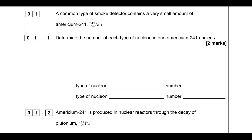A common type of smoke detector contains a very small amount of americium-241, and we've got its nuclide notation there. What I want us to do is determine the number of each type of nucleon in one americium-241 nucleus. The number of protons is easy - it's just 95, so let's get that one first. We've got that down there.